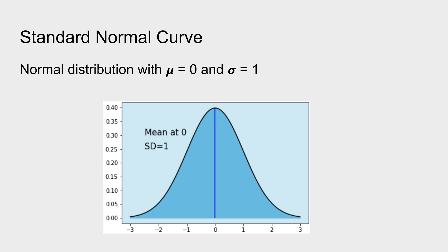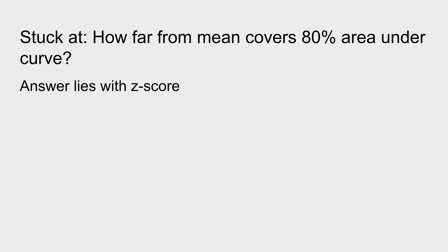Standard normal curve: it is a normal curve with mean at 0 and standard deviation at 1. This is precisely what a standard normal curve is. We study it especially because a lot of calculations become easier for the standard normal curve than for a normal curve with any arbitrary mean or standard deviation.